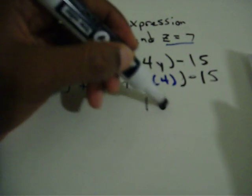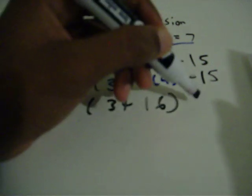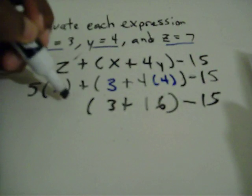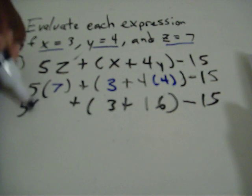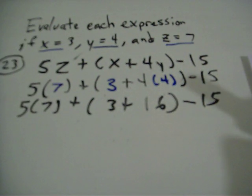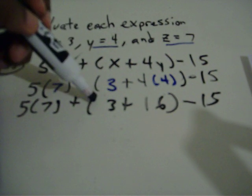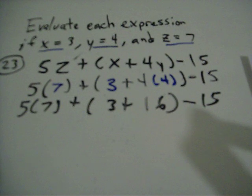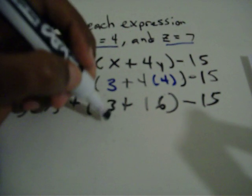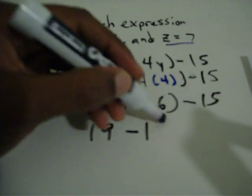So 4 times 4 is 16, plus 3. I'm going to rewrite the rest of the problem. With order of operations, I still have to do the parentheses. So in the parentheses I have 3 plus 16, which is 19. So I end up with 19 here, minus 15.